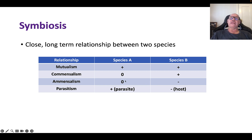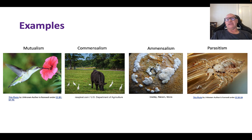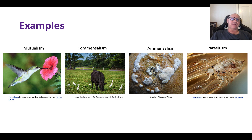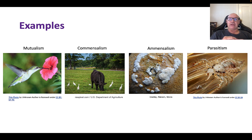With amensalism, one species has no effect while the other is actually harmed. A good example is penicillium — the penicillium fungus releases chemicals as part of its metabolism that kill bacteria. However, the penicillium mould doesn't actually get any benefit from that interaction; it simply harms the bacteria as a byproduct of its normal processes.